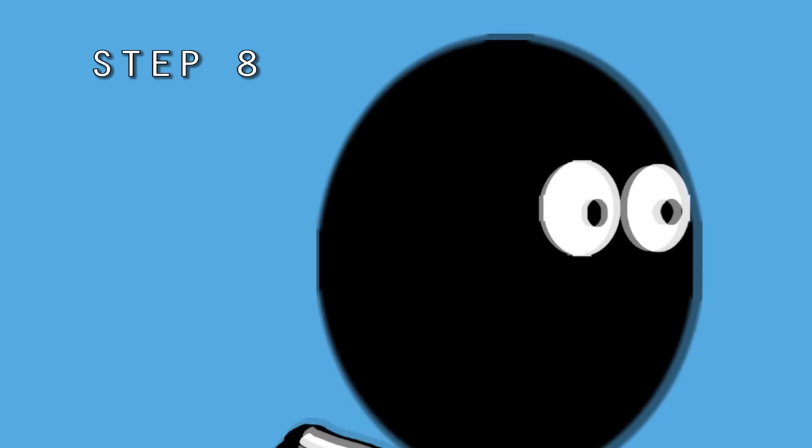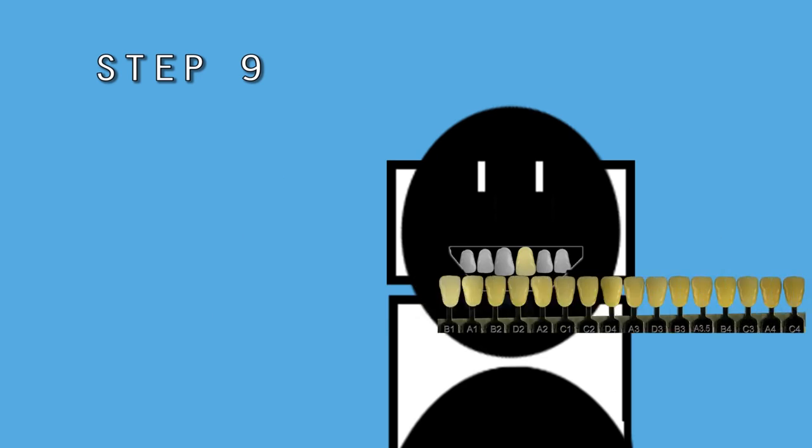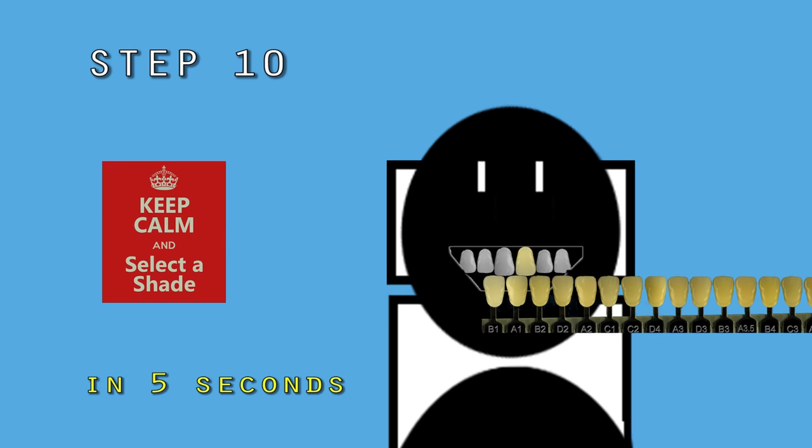Step 8. Squint your eyes for a more accurate value perception. Step 9. In this step, you will select the closest two Shade Tabs in value.